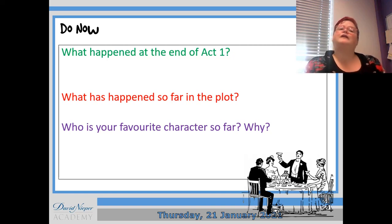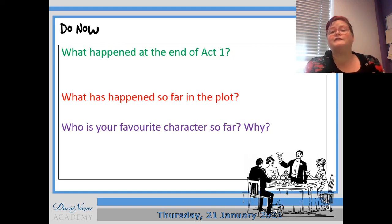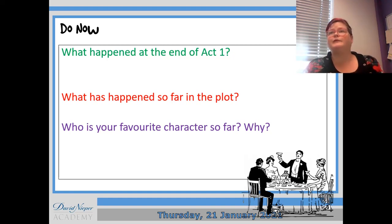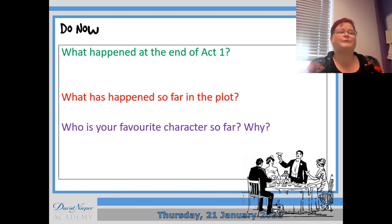Hopefully you have come up with some answers. So at the end of Act 1, Gerald and Sheila had a bit of a confrontation and Gerald admitted that he cheated. What's happened so far in the plot is that we found out the family is celebrating Sheila and Gerald's engagement. Before the inspector turns up, Mr. Birling gives his big speech where he talks about things that aren't going to happen, but then it turns out they did happen, so it shows that he's a bit of a fool.